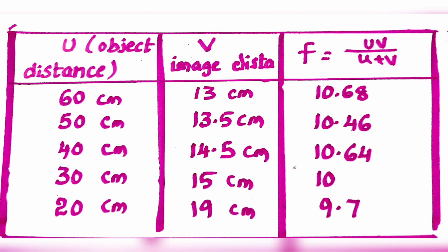Here we recorded all values of object distances and image distances in our table. For object distance 60 cm, we got 13 cm image distance. For 50 cm, we got 13.5 cm. For 40 cm, we got 14.5 cm. For 30 cm, we got 15 cm. For 20 cm, we got 19 cm of image distance. The focal lengths calculated are 10.68 cm, 10.46 cm, 10.64 cm, and similar values.